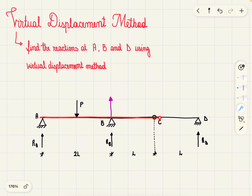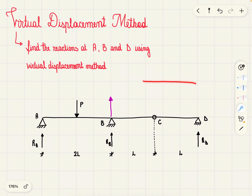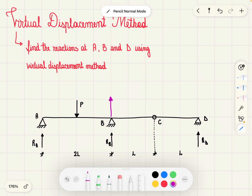We also know that this beam, due to this hinge, is going to be split into two rigid bodies — one rigid body from A to C and one rigid body from C to D. When we draw the bending moment diagram, a rigid body means it's not going to bend, it's just going to be a straight line. So moment at A is zero, we start from here, and it continues as a straight line all the way until the hinge at C.